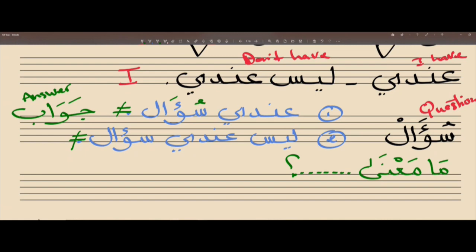And then we have two more words - one is conjugated, the other is just a noun. The word we're looking for is أحب. أحب. And what does أحب mean? ما معنى أحب? I love. Mumtaz. And we say أحب.